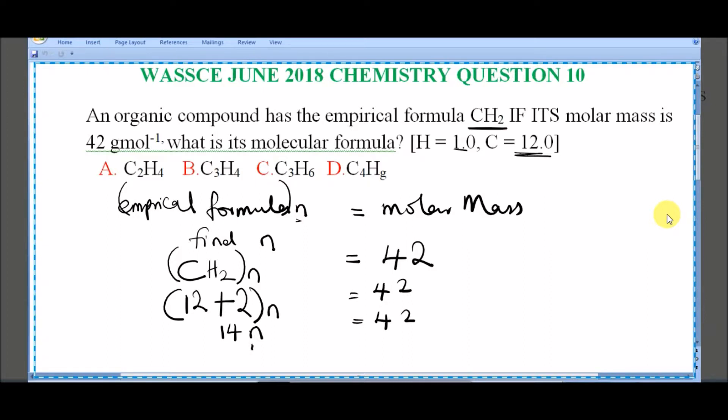So that N is equal to 42 over 14, which will give us 3. So N is 3.